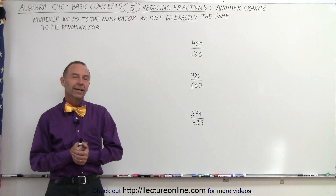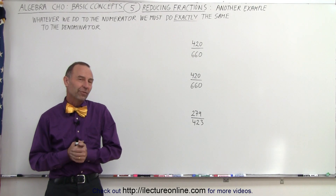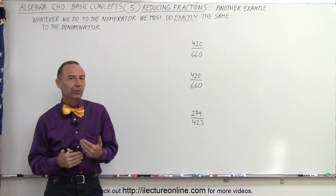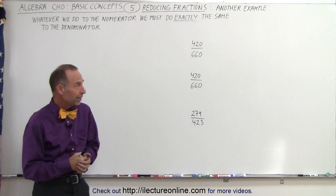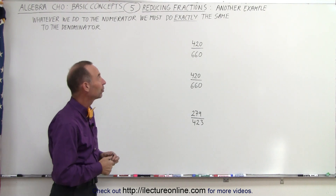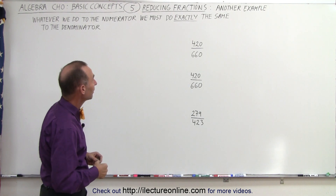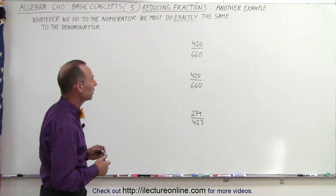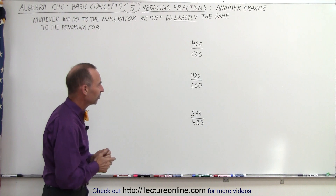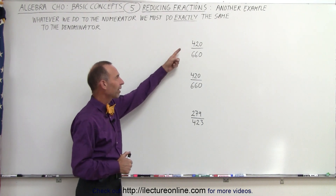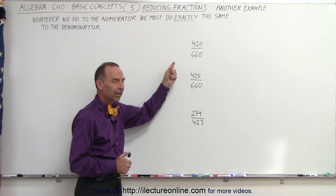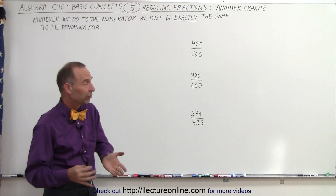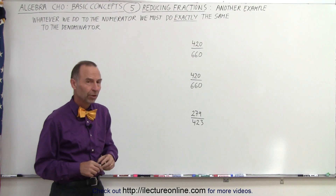Welcome to ElectronLine. Now let's try some fractions that are a little bit more difficult to simplify and reduce. Let's start with the first one: 420 divided by 660. Notice I have that same fraction on here twice because there are different ways in which we can look at that fraction.